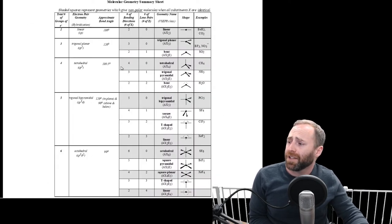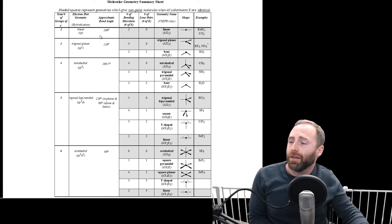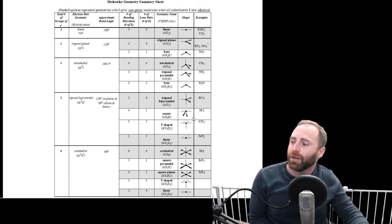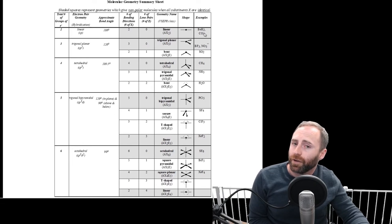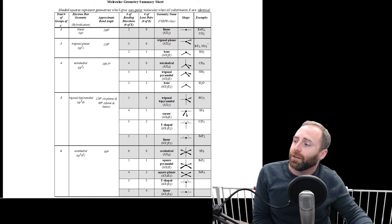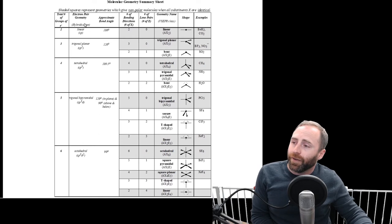This larger table gives you more information in terms of bond angles and breaks it down in terms of bonding regions versus lone pairs. It gives you the VSEPR class name, examples of how to draw the shapes, and some examples of molecules — so if you wanted to draw those molecules out and prove it to yourself from a Lewis structure, you can walk through this table.